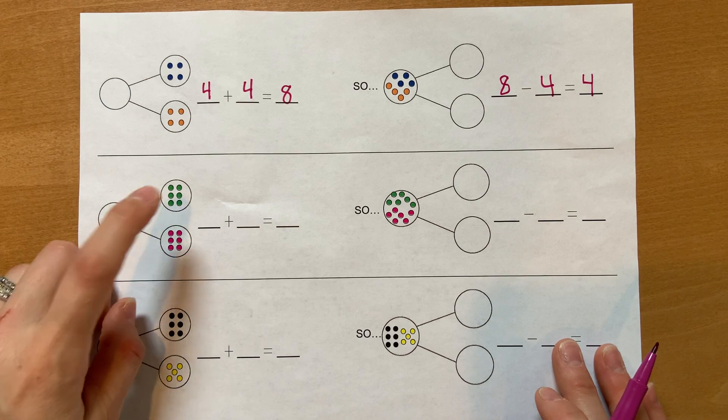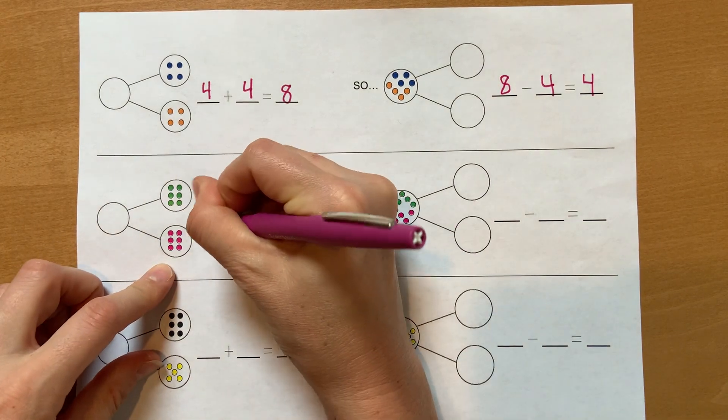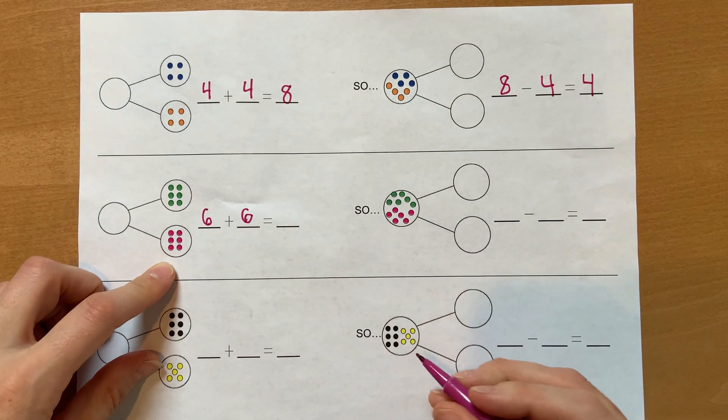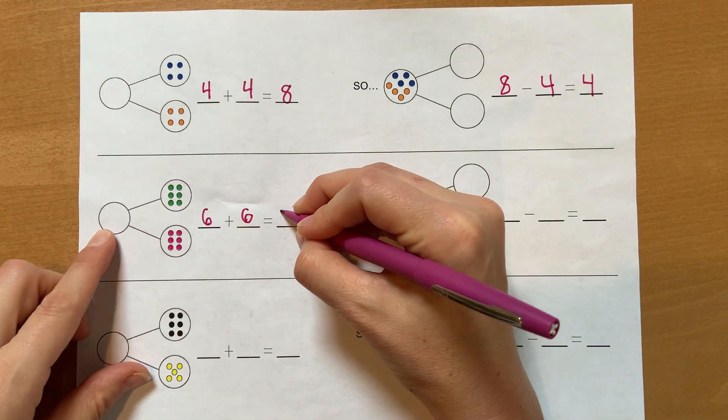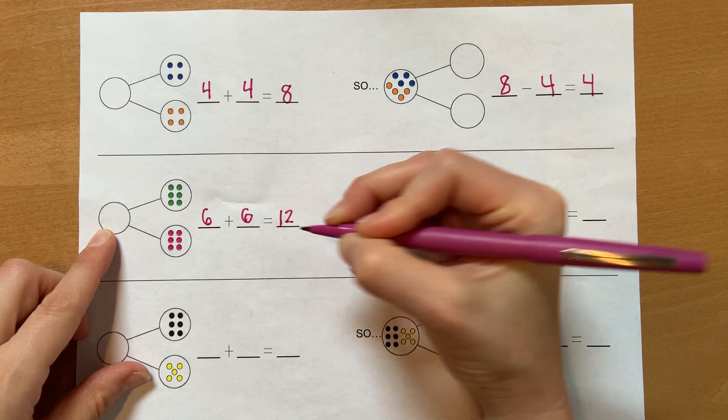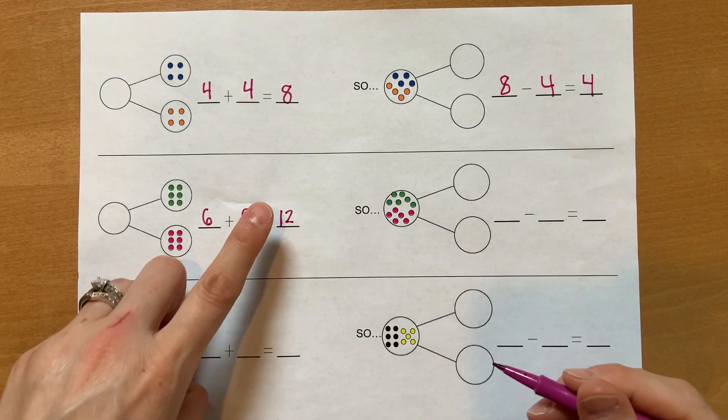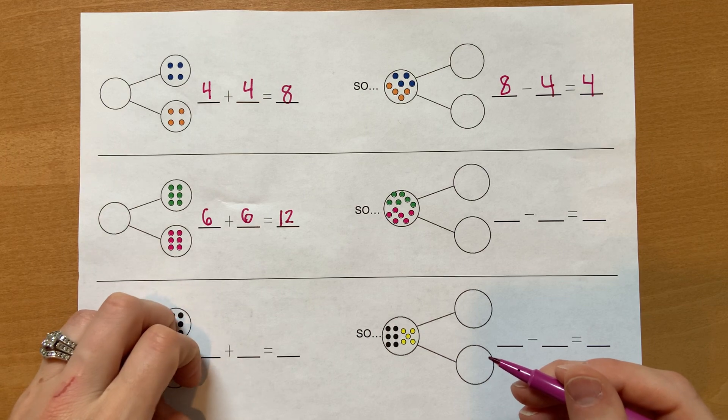All right, I know this shape. It's six. It's another double. Six plus six. Six plus six makes twelve is the whole. Perfect, twelve. It's a ten and two ones.